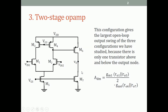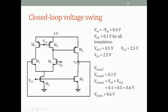Let us close the loop and look at the closed-loop voltage swing. We connect the output to the negative input of the differential amplifier — in this case M1 is the negative input. Using the same numbers as before: threshold voltage of 0.4 V, overdrive of 0.1 V for all transistors, and therefore VGS of 0.5 V for all transistors. So VG5 is 0.5 V.